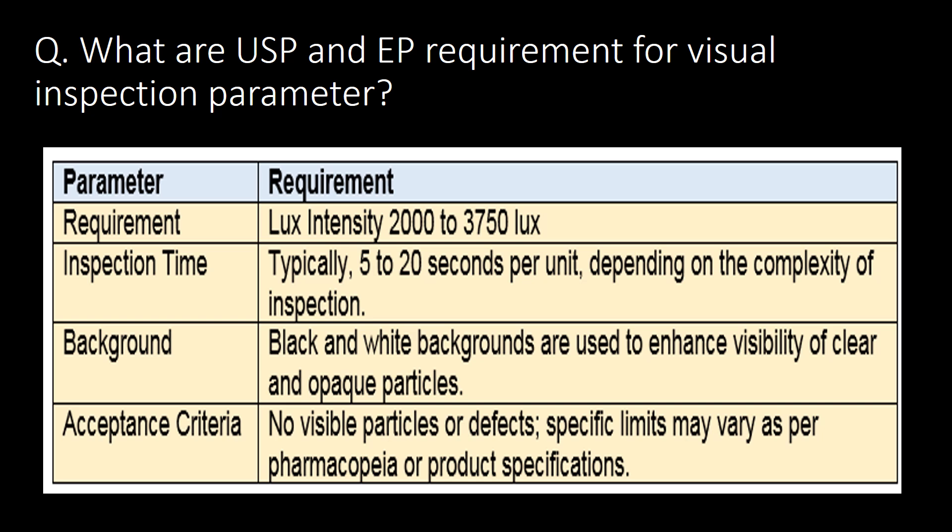What are the USP (United States Pharmacopoeia) and EP (European Pharmacopoeia) requirements for visual inspection parameters? The requirements are mainly for lux intensity of 2000–3750 lux, inspection time typically 5 to 20 seconds per unit, black and white backgrounds to enhance visibility, and acceptance criteria of no visible particles or defects, with specific limits varying per pharmacopoeia or product specifications.